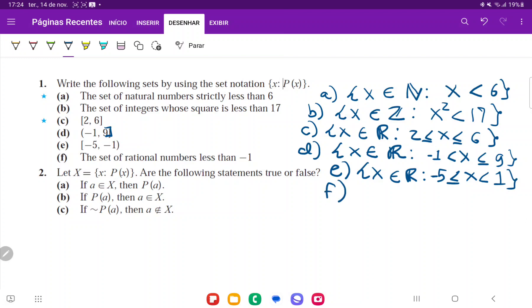And lastly for f we're going to have the set of rational numbers less than minus 1. So we're going to choose an x belonging to the rational numbers, that's where we get it from, such that x is going to be less than negative 1. And that is it for number 1.